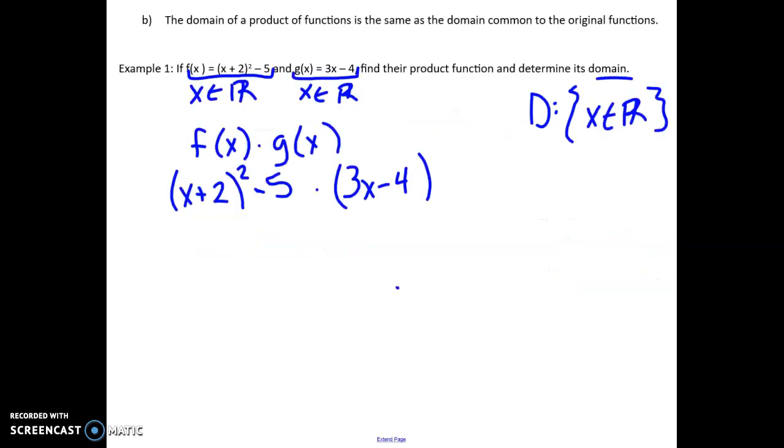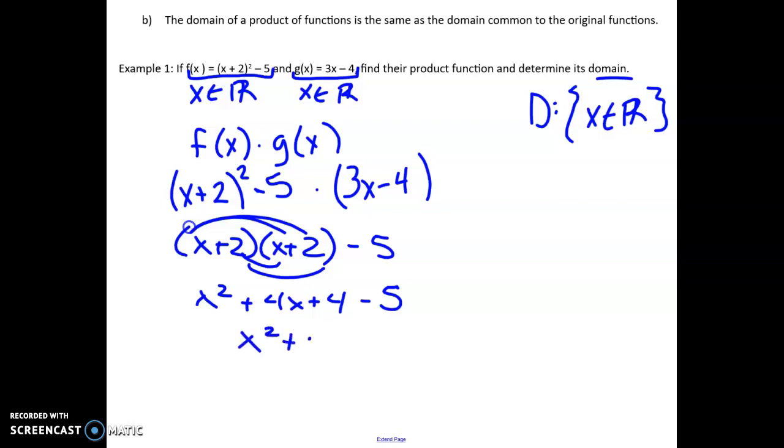All right, so if I find the product here, we have to multiply it out. First of all, I have this x plus 2 squared. Be careful—x plus 2 squared means x plus 2 times x plus 2, and now I'm going to subtract the 5 from that. So first I have to FOIL this part out, which will give me x squared plus 4x plus 4, and then I'll subtract that 5 from it. So let's just finish this off. When I have the 4 and the minus 5, I get x squared plus 4x minus 1. So that is my f of x function.